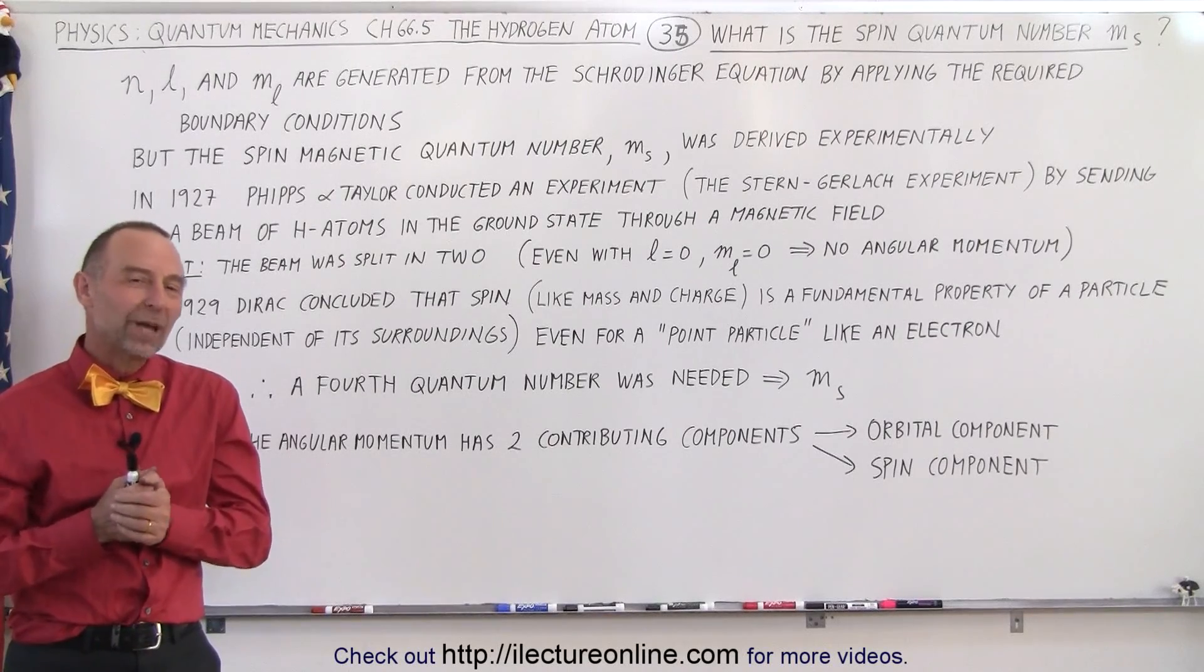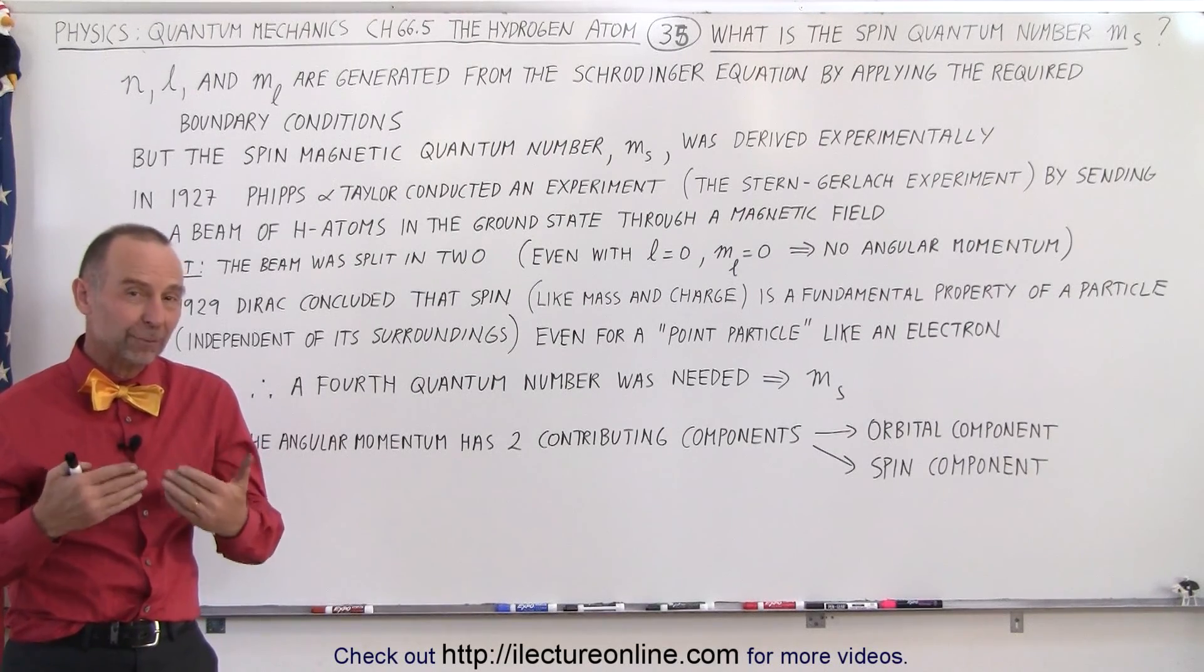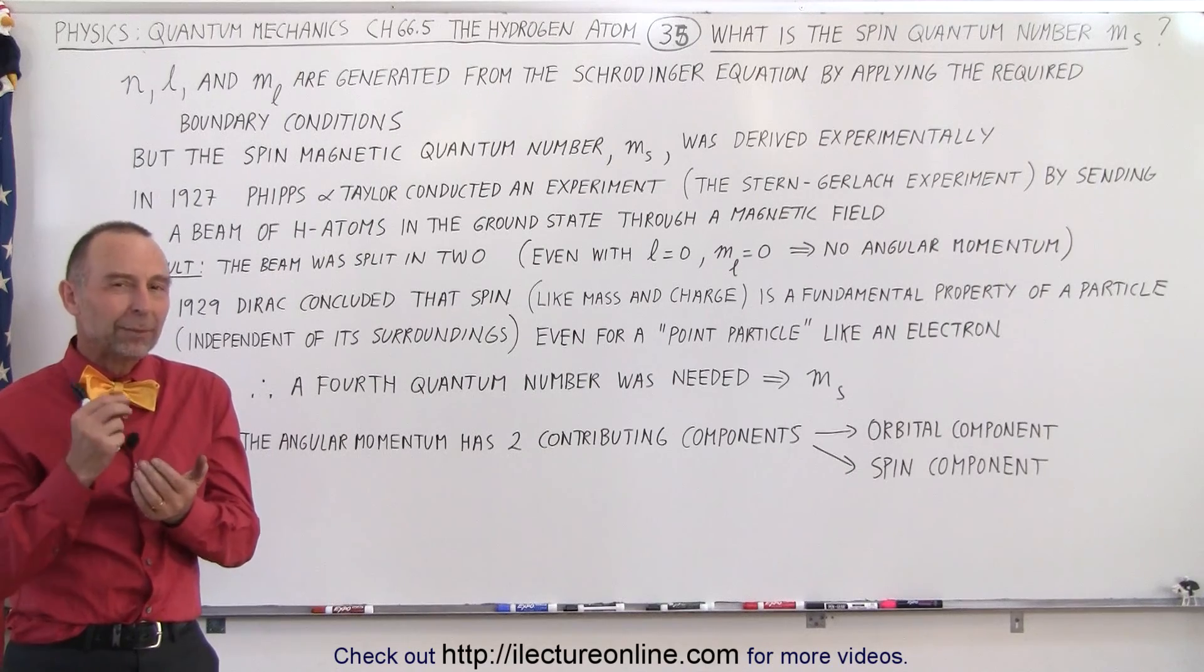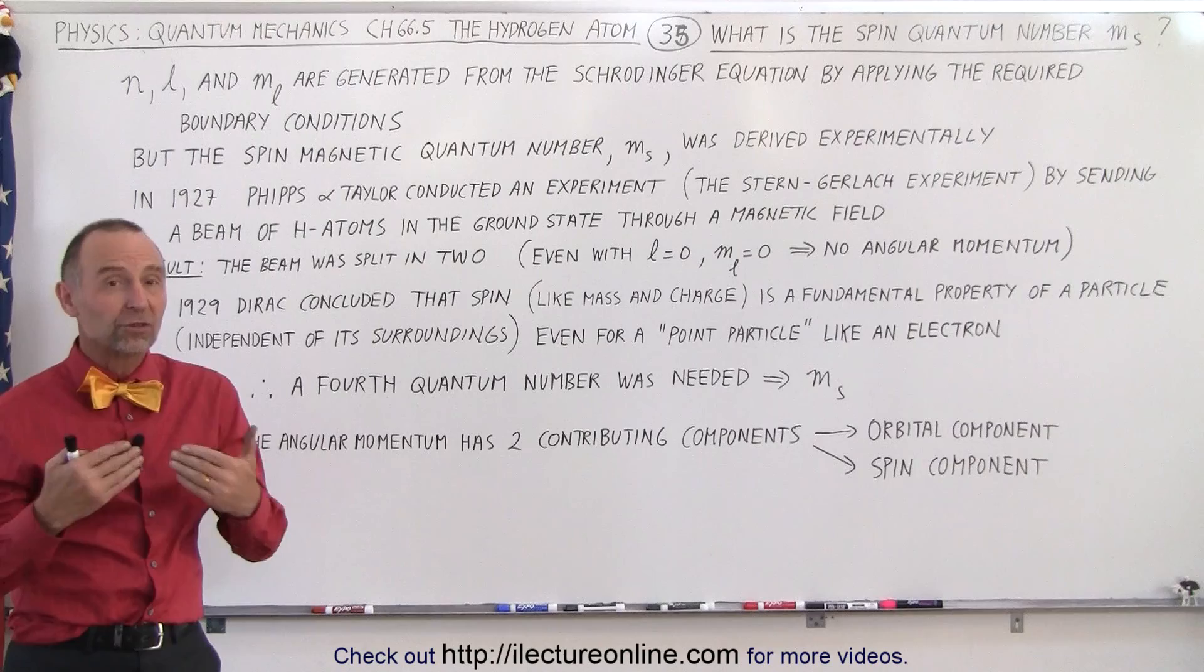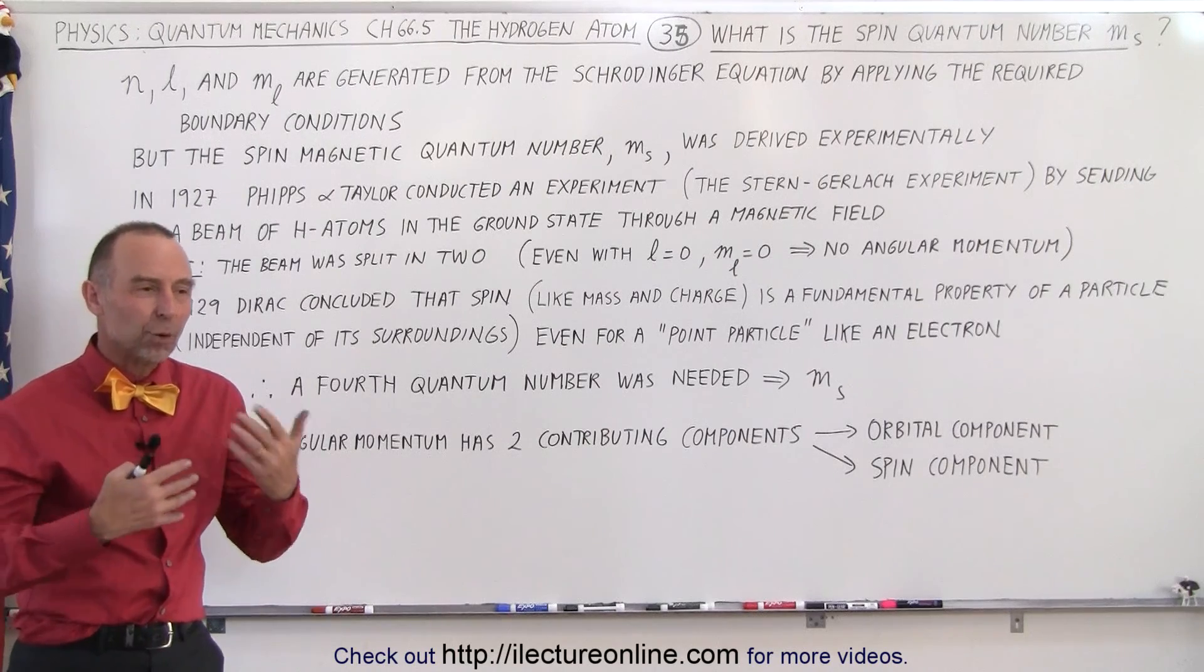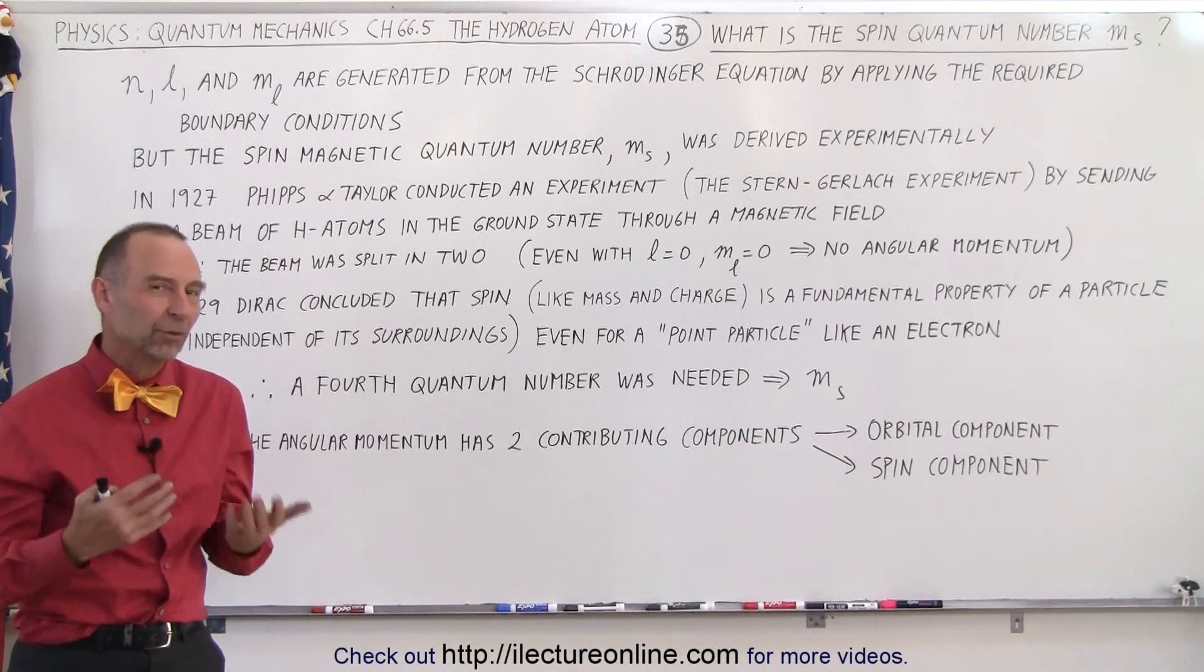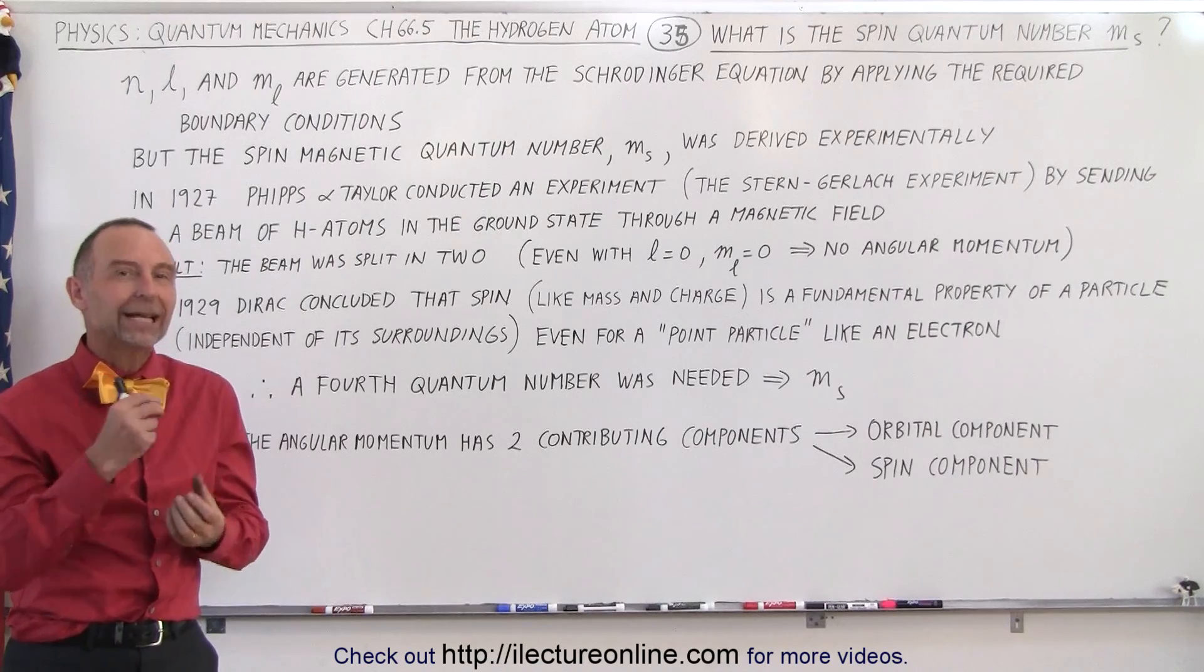Welcome to ElectronLine. We have discovered, as we showed in previous videos, that we are able to obtain three quantum numbers related to the Schrodinger equation that define the motion, the position, the angular momentum, and so forth of an electron in a hydrogen atom.